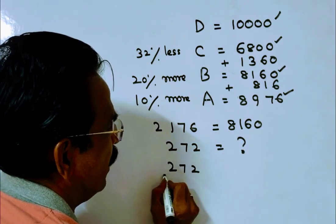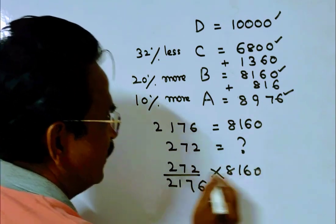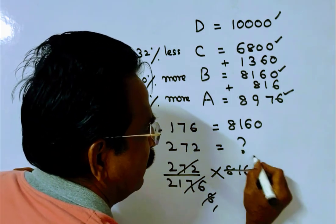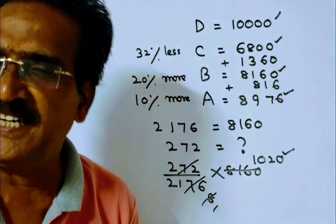272 divided by 2,176 times 8,160. This is the marks obtained by B. Thank you, have a nice day.